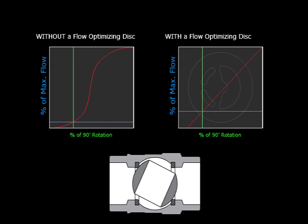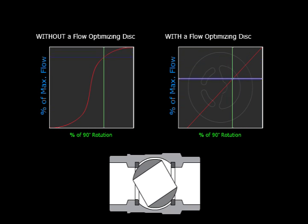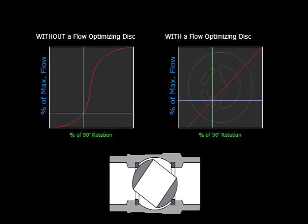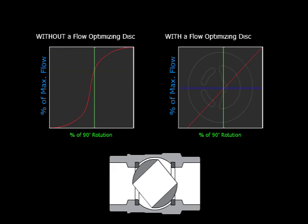The purpose of the flow optimizer is to make the flow rate increase evenly in direct proportion to the rotation of the ball. These curves clearly illustrate the principle. See how the percentage of flow on the valve with the optimizer disc increases at a steady slope as the ball rotates?